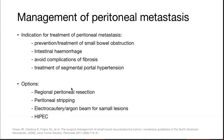Peritoneal metastasis is present in around 15% of patients. Management is generally aimed at prevention and treatment of bowel obstruction, intestinal hemorrhage, avoiding complications of fibrosis, and treatment of portal hypertension. Options are regional peritoneal resection, peritoneal stripping, HIPEC, and electrocautery or argon beam for small lesions.